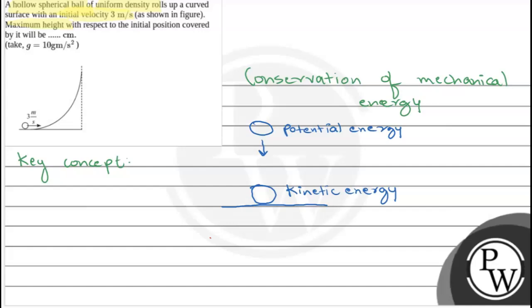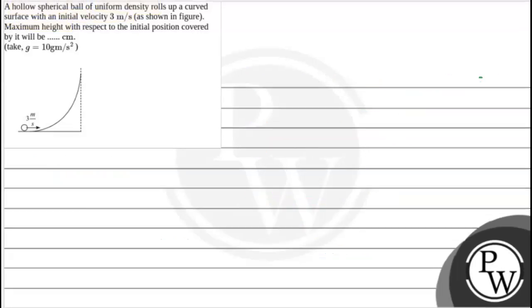So in this system, there is conservation of mechanical energy because energy at top equals energy at bottom. At bottom is kinetic energy and on top is potential energy. Now, firstly,